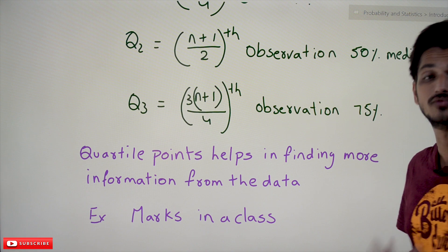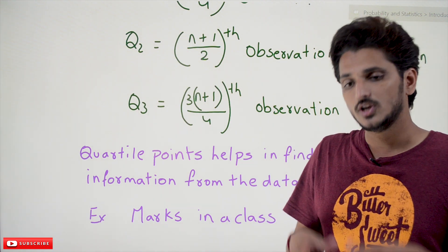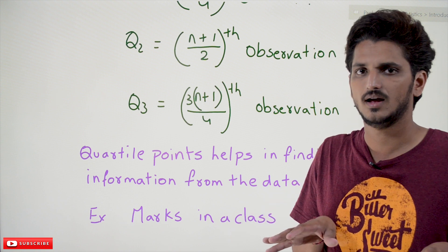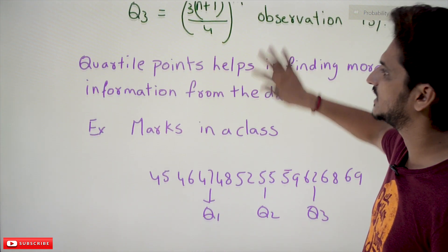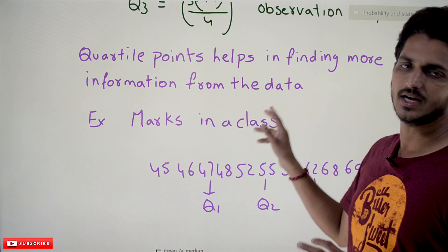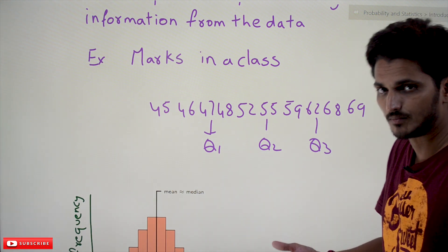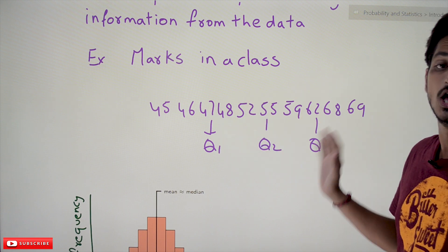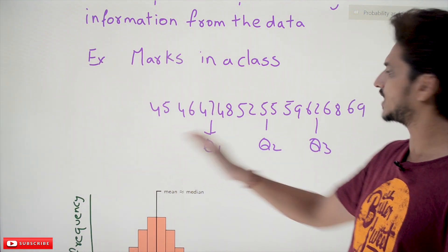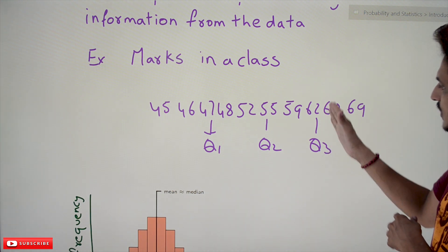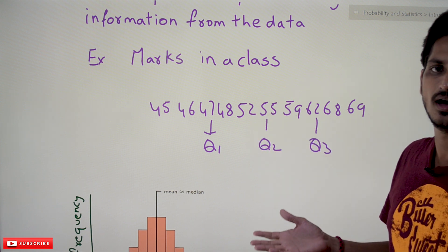But what's the use of these quartile points? Simply identifying the measure of central tendency is not helpful in most situations. In order to have a deeper understanding of the data, we need quartile points. For example, if you take marks in a class, simply finding the average marks of students is not enough. With quartile points you can divide the data into four parts: the first 25% are poor students, the students above Q3 are bright students, and those in between are average students. That's why quartile points are helpful.